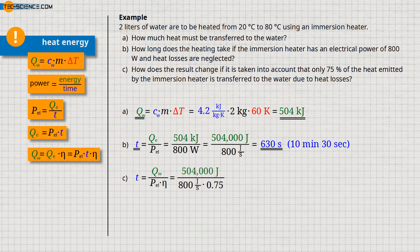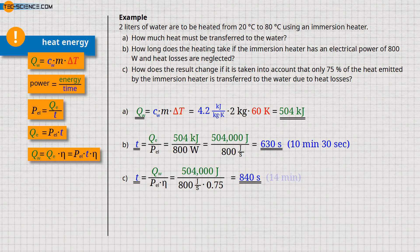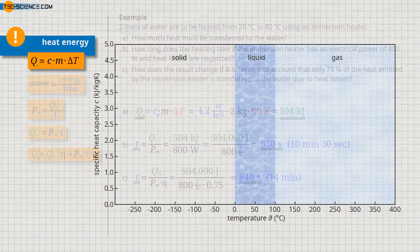At this point, we do not indicate the efficiency of 75% as a percentage, but as a decimal number of 0.75. We now obtain a time duration of 840 seconds, which corresponds to 14 minutes. Note that the derived formula also applies to an ideal heating process. In this case, the efficiency is then simply assumed to be 1, so that 100% of the emitted heat is absorbed only by the water.